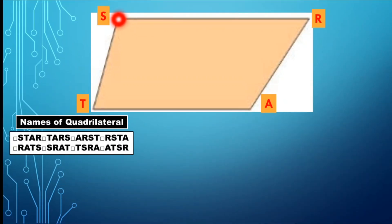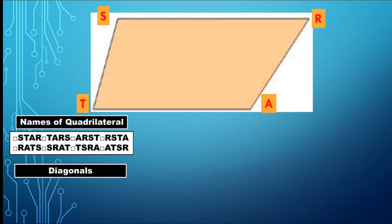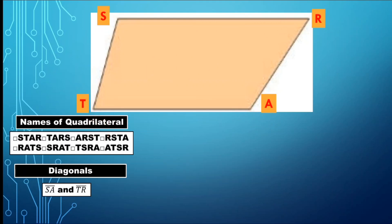If we connect vertex S to vertex A, we form a particular segment. What do we call that segment? That is what we call a diagonal. Based on this illustration, how many diagonals can be formed? We have diagonal SA and diagonal TR. So these are the pair of diagonals.